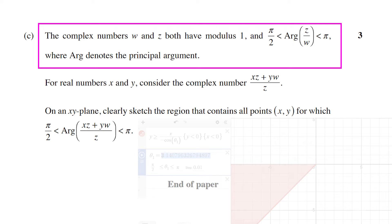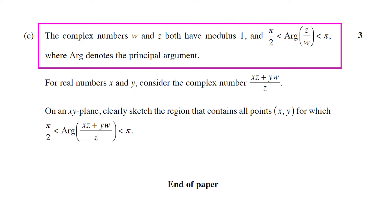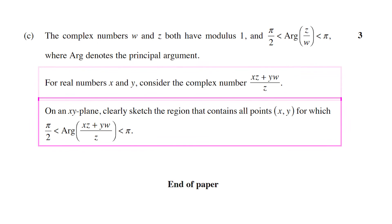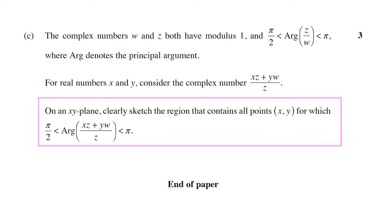The complex numbers W and Z both have modulus 1, and arg(Z/W) is between π/2 and π, where arg denotes the principal argument. For real numbers X and Y, consider the complex number (XZ + YW)/Z. On an XY plane, clearly sketch the region that contains all points X and Y for which arg((XZ + YW)/Z) is between π/2 and π.